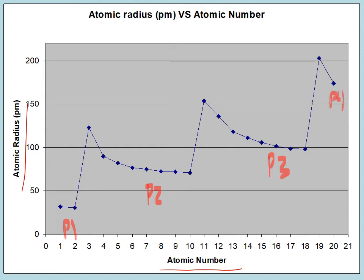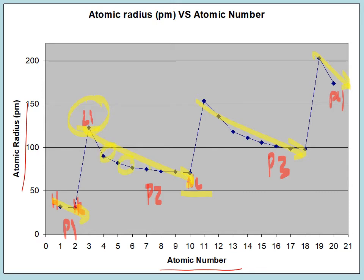On a graph of atomic radius versus atomic number, we can visualize the pattern. Period one contains hydrogen and helium; period two goes from lithium to neon; period three follows. Within the periods, the trend is that as you move across a period, the atoms get smaller. Don't confuse size with mass — as you move across a period, the atom becomes more massive, but here we're talking about the space it occupies. Lithium is a larger atom, and it gets smaller across to neon.